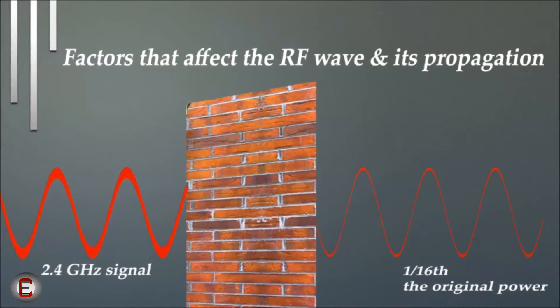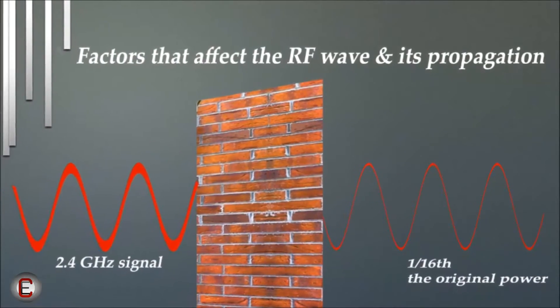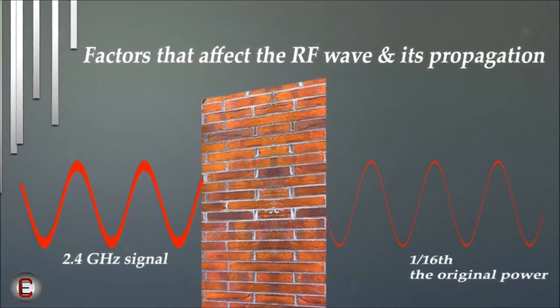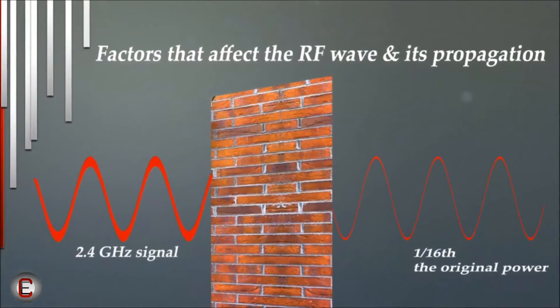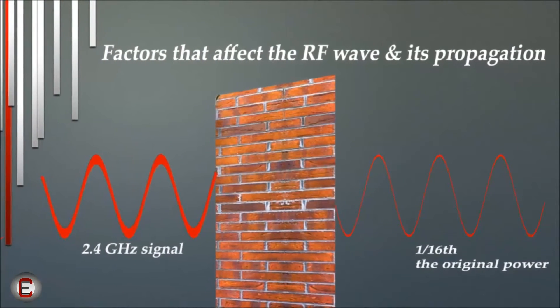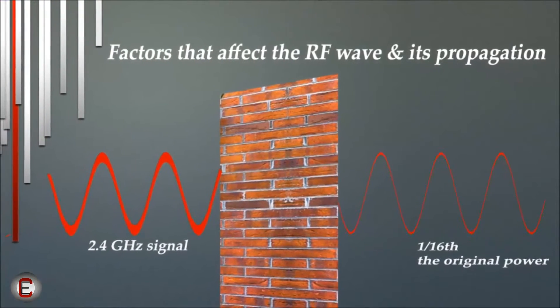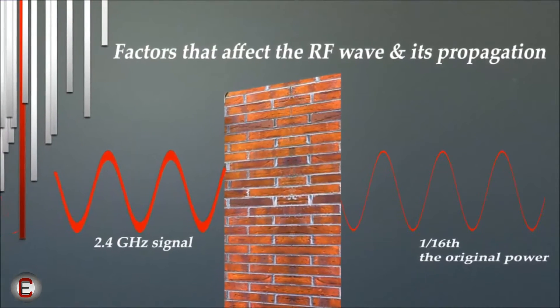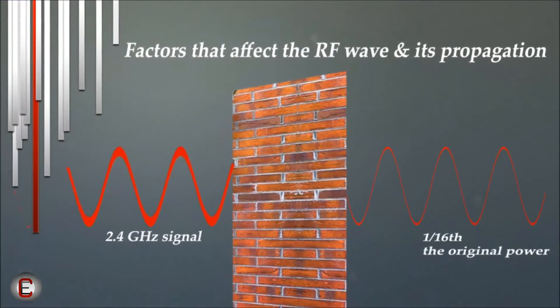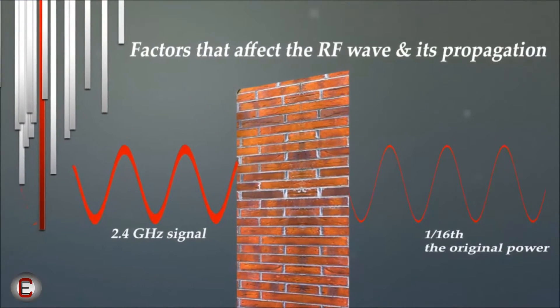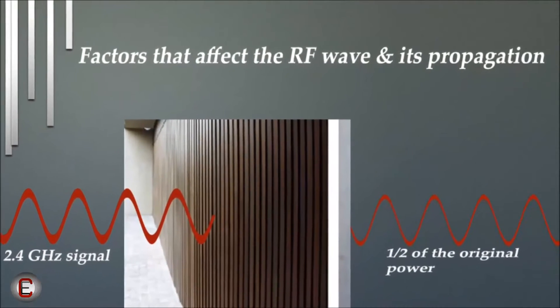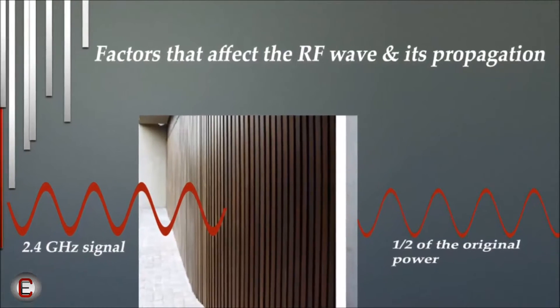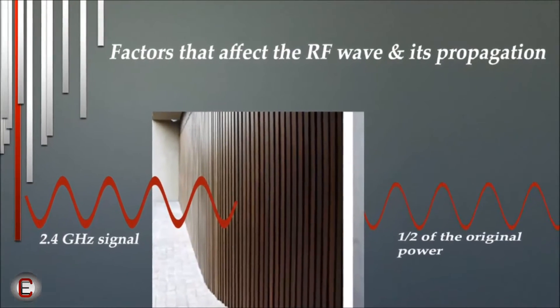Here is a diagram that explains how RF waves are absorbed. A 2.4 GHz signal will be 1/16th of the original power after propagating through a brick wall. That same signal will only lose half the original power after passing through a drywall.